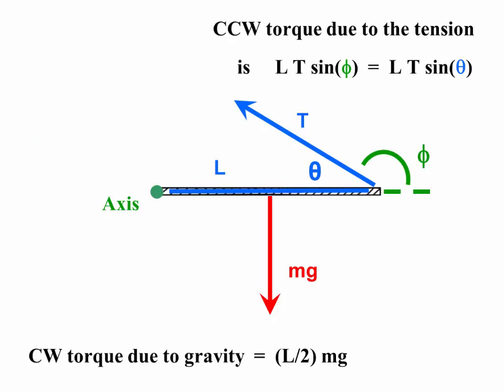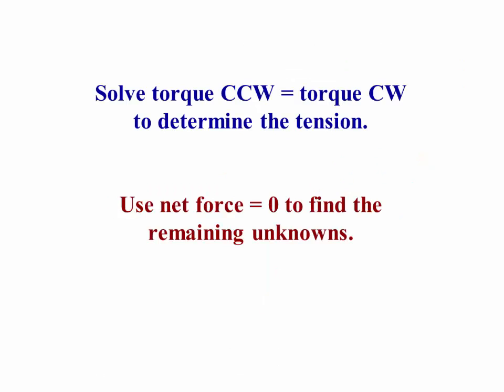This shows how that's done, same as before. We've got now L from the axis to where the tension force acts. An angle phi that's from that direction back towards the tension. That's counterclockwise. And we calculate LT sine phi by just doing LT sine theta, because the sine of theta equals the sine of phi. The clockwise torque is just due to gravity. It will be L over 2 times mg, because the force of gravity is acting at the center of mass, which is at the physical center of that beam and of the sign for this particular simple problem.